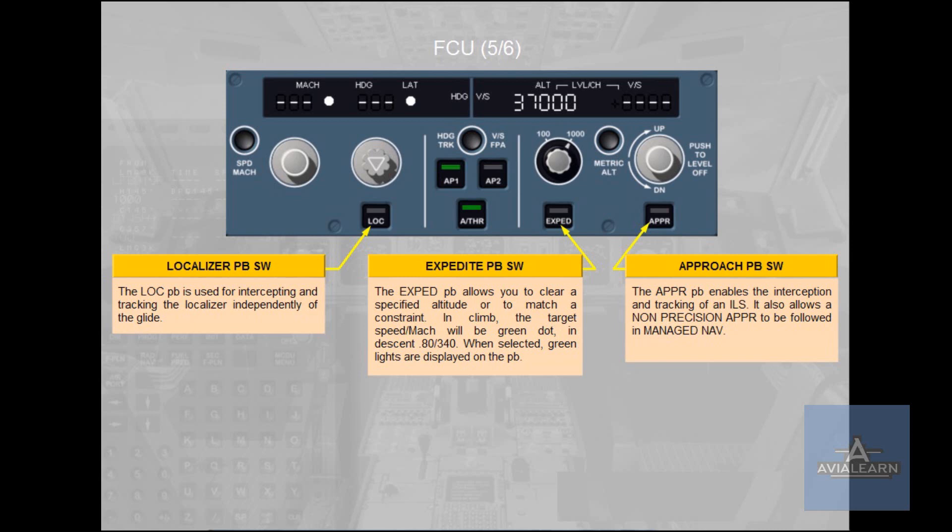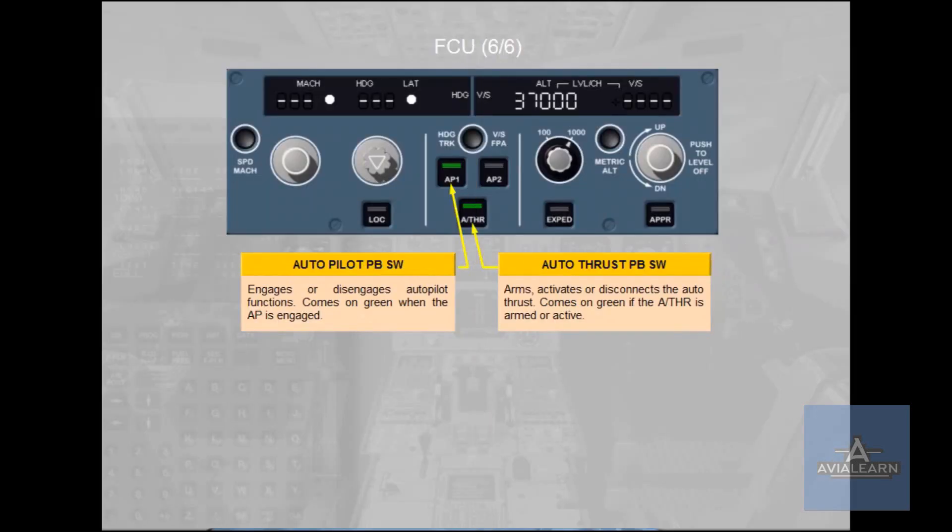The Approach Push Button Switch enables the intercepting and tracking of an instrument landing system. It also allows a non-precision approach to be followed in managed navigation. The Autopilot Push Button Switch engages or disengages Autopilot functions; it comes on green when the Autopilot is engaged. The Autothrust Push Button Switch arms, activates or disconnects the Autothrust; it comes on green if the Autothrust is armed or active.